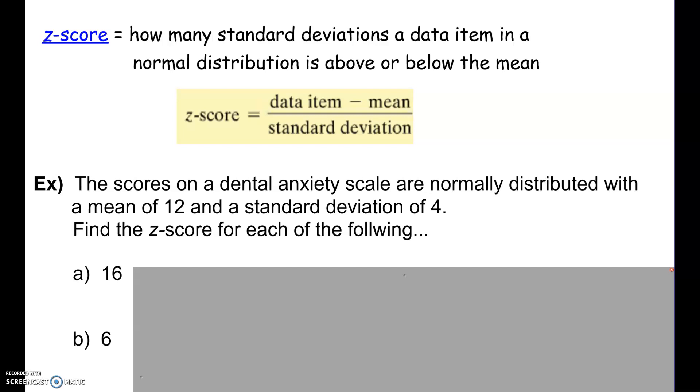Z-scores are related to data that is normally distributed, and all it really is telling us is how many standard deviations that particular data item is either above or below the mean. The Z-score is calculated very simply: data item minus the mean divided by the standard deviation. If it's a positive number, that means you're above the mean, and if it's negative, you're below the mean.